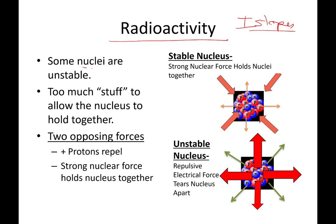Some nuclei of some atoms are unstable. What does that mean and where does that come from? Well, some nuclei of atoms have basically too much stuff inside that nucleus to allow them to hang together and hold together well.